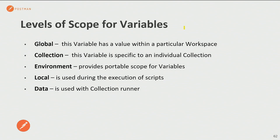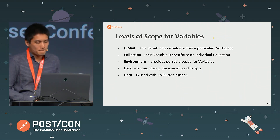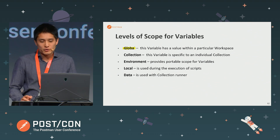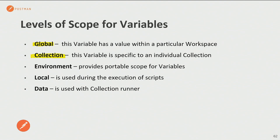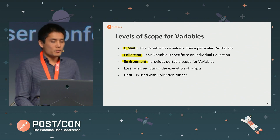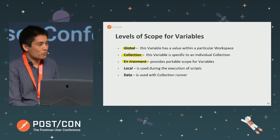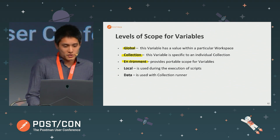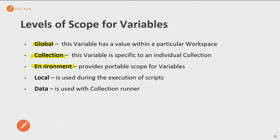In Postman, there are five levels of scope for variables: global, collection, environment, local, and data. A global variable has a value within a particular workspace. A collection variable is specific to a collection — its value only applies to that collection. An environment is a portable scope for variables, which I'll cover in more detail shortly. Local variables are used in test script execution, and data variables are only used when you upload a data file when running a collection with the collection runner. In this session, we'll look at global, collection, and environment variables.